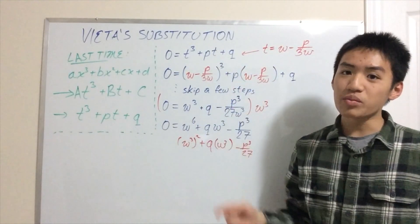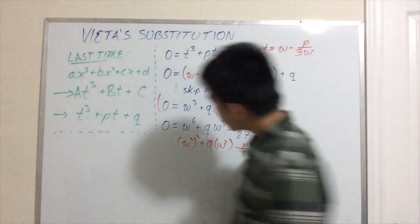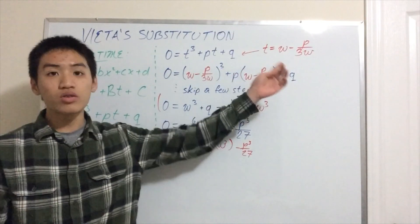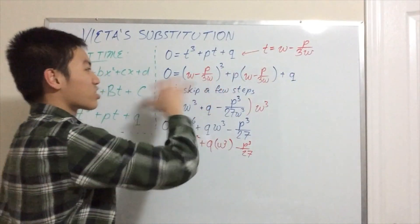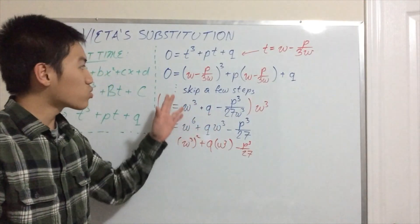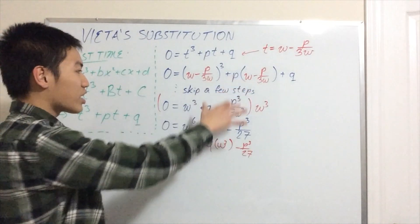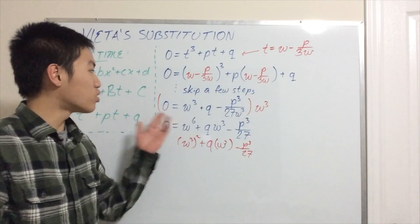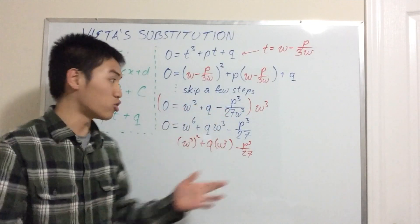How do we solve it? We need to make, as you might have guessed, a substitution. And I'll tell you, the substitution is just t = w - p/(3w). We plug it in, we expand it. I skipped a few steps on the board, we'll revisit it later. I just want you to see what this substitution gives us right now. Plug it in, and like magic, we end up with 0 = w³ + q - p³/(27w³).